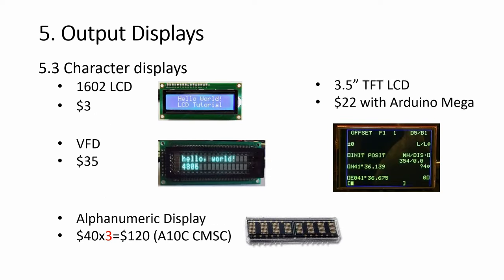Character displays differ a lot in price. The 1602 LCD is only about three dollars. The VFD is 35 dollars — quite a lot more. The alphanumeric ones for the A-10C CMSC require three pieces at 40 dollars each, so the total becomes 120 dollars. For the CDU, you need an LCD and you can buy it as a package which also comes with a Mega — the whole thing is about 22 dollars, which is very cheap.